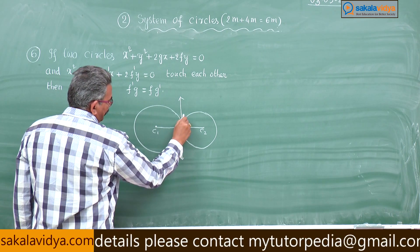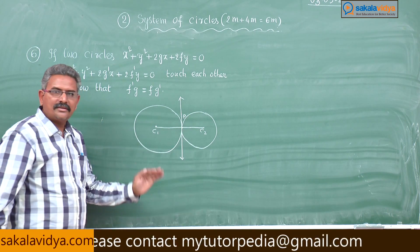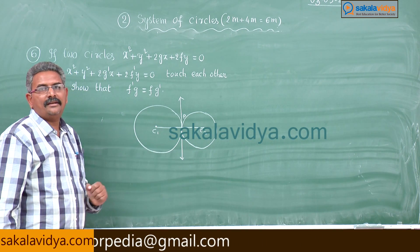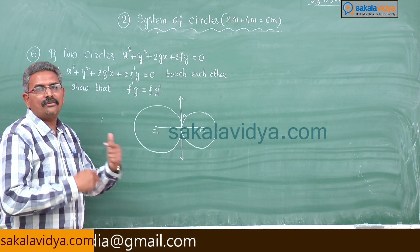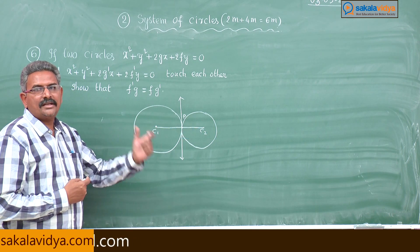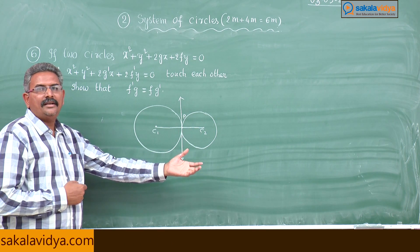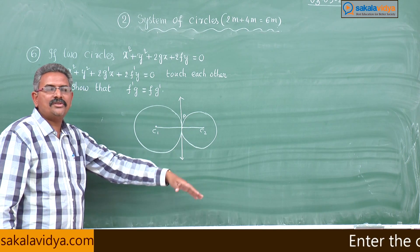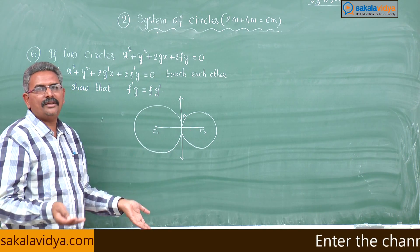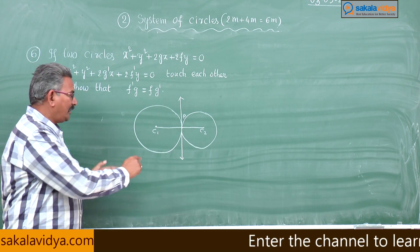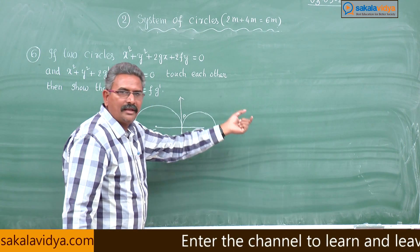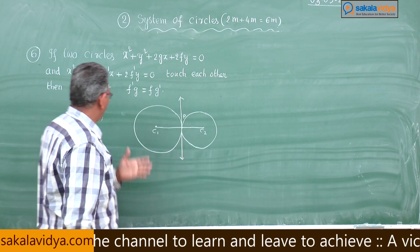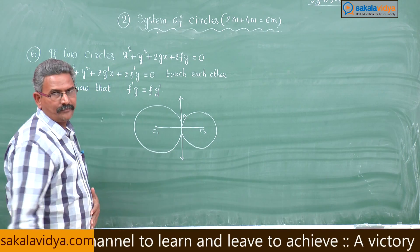So C1, P, C2 lie on the same line — that means they are collinear. The condition for collinearity is: if the area formed by these three points equals zero, then they are collinear. So we have to find the area of the triangle formed by these three points and equate it to zero to get this condition.